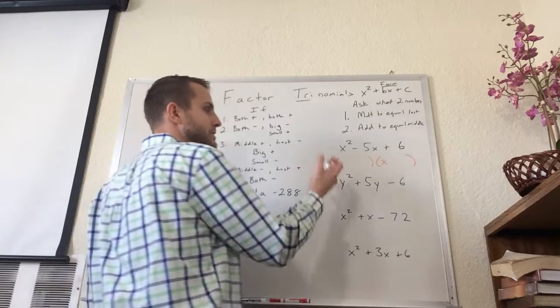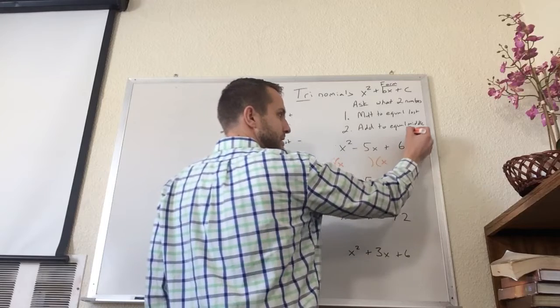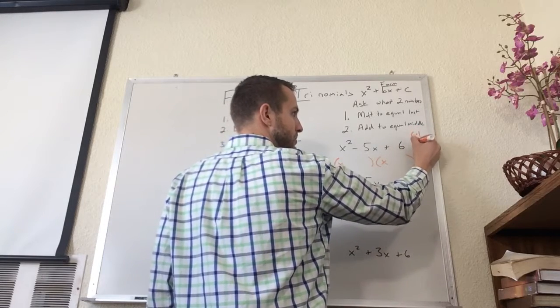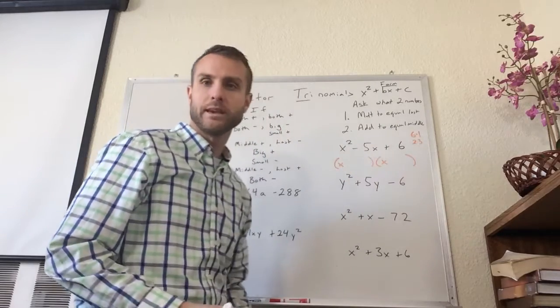Finally, I'm going to use these two steps and I'm going to ask myself what two numbers multiply together to equal 6. So my factors of 6 would be 6 times 1 or 2 times 3 and then add together to equal negative 5.